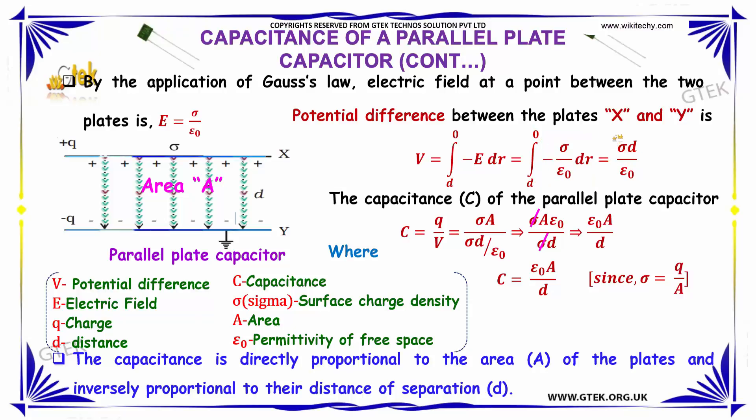The capacitance C of a parallel plate capacitor is C = q/V, where C is capacitance, q is charge, and V is potential difference. Substituting the values for charge q and potential difference V, we get C = σA/(σd/ε₀).